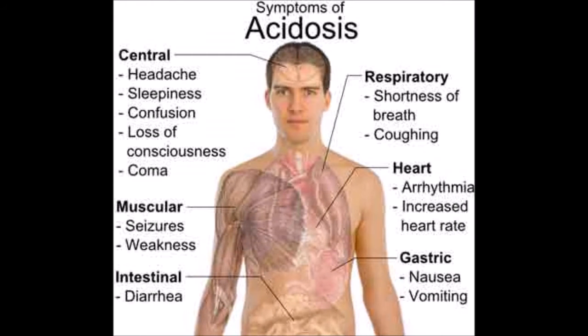Acidosis: Whenever the alkalinity of the blood is reduced, even slightly, its ability to transport carbon dioxide gets reduced. This results in accumulation of acid in the tissues. This condition is known as acidosis, or hypoalkalinity of the blood.